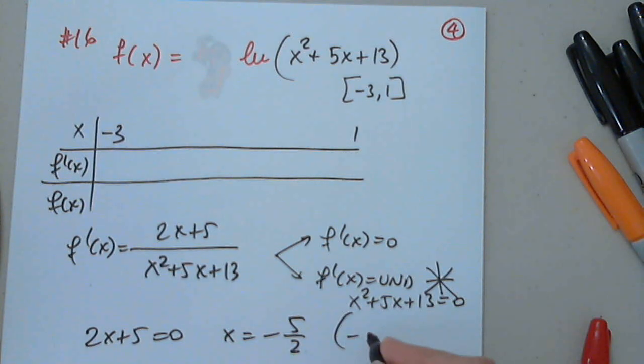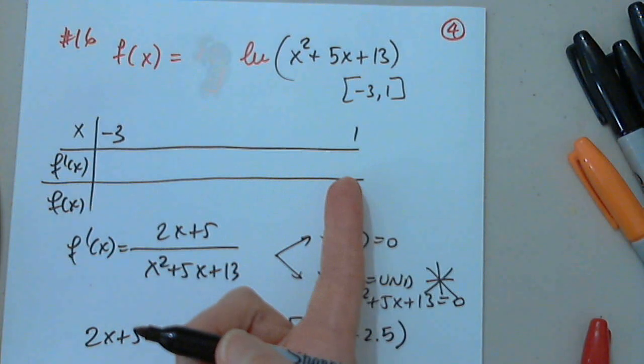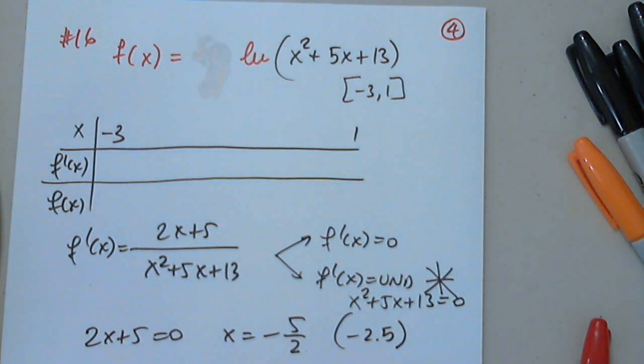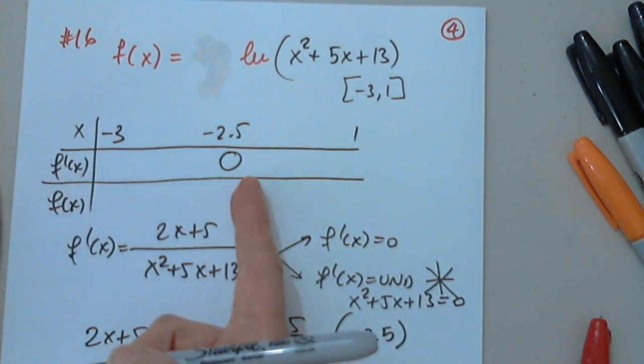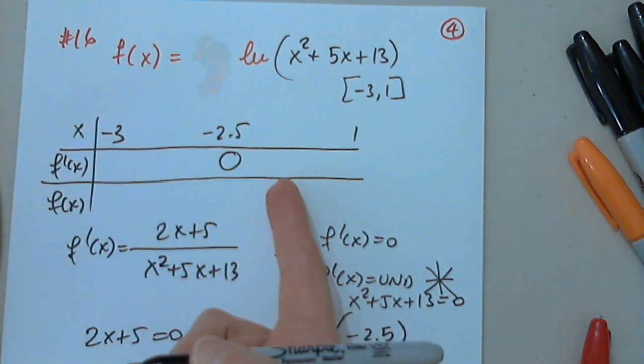Or negative 2.5. I have to make sure that it's in between these two. Otherwise I will not put it in. And it is. So I will put negative 2.5, 0 immediately because f prime is 0. And I have to study the sign.